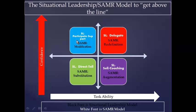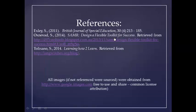The next level up is the overconfident group. Here you need to participate and support them to find the skills they're missing that prevent them from being delegated to — this corresponds to modification, just about helping them get it right. Then the very top level is high task ability and high confidence, which aligns with SAMR's redefinition level. Here you just delegate, designing only the rubric of the learning outcome. And those are my references — I hope you've enjoyed this.